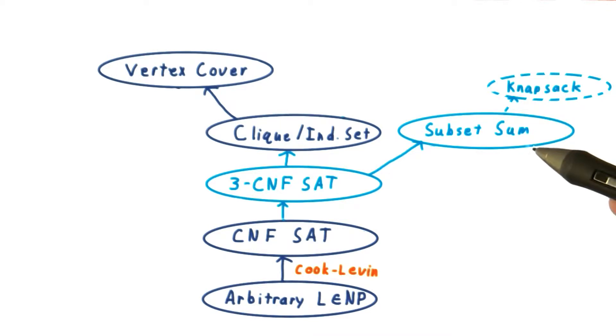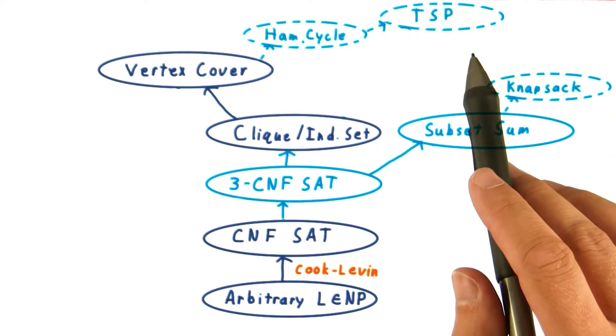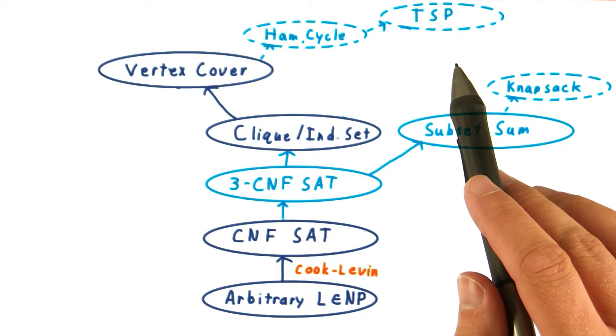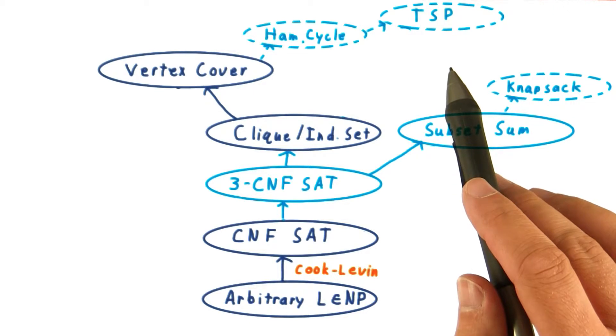you might consider reducing subset sum to the knapsack problem, where one has a fixed capacity for carrying stuff and wants to pack the largest value subset of items that will fit. Another classic problem is the traveling salesman. He has a list of cities he wants to visit, and he wants to know the order that will minimize the distance he has to travel.